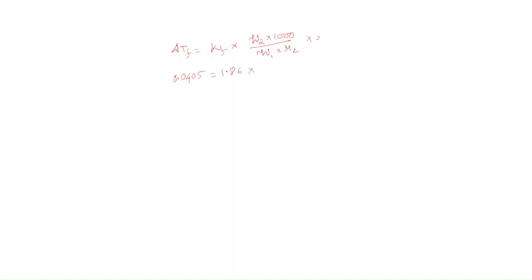W2 we found is 0.525. So: 0.0405 = 1.86 × i × 0.525 × 1000 / (1000 × 46).